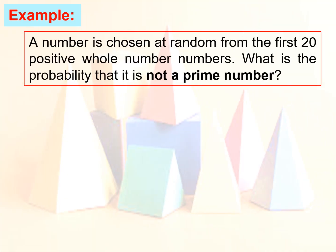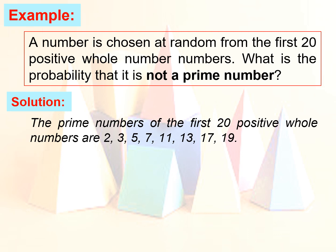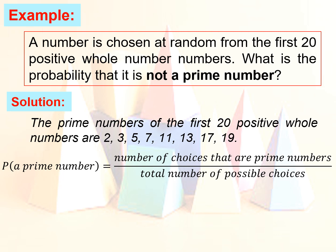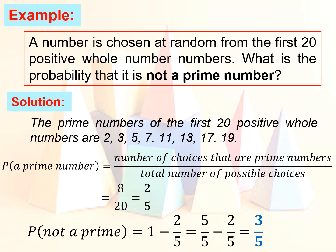A number is chosen at random from the first 20 positive whole numbers. What is the probability that it is not a prime number? First, we determine the prime numbers from 1 to 20: they are 2, 3, 5, 7, 11, 13, 17, 19 — numbers whose only factors are themselves and 1. So the probability of getting a prime number is 8 over 20, which equals 2 over 5 in lowest terms. Therefore, the probability of not getting a prime number is 1 minus 2 over 5, which equals 5 over 5 minus 2 over 5, equal to 3 over 5.